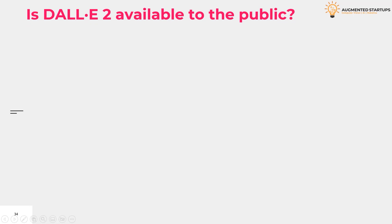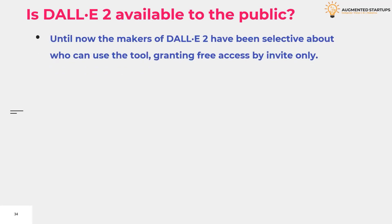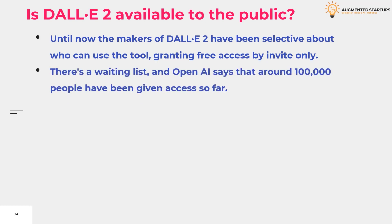So what is actually DALL-E 2? DALL-E 2 is a text-to-image AI generator. Until now, the makers of DALL-E 2 have been selective about who can use the tool, granting free access by invite only. There is a waiting list, and OpenAI says that around 100,000 people have been given access so far.